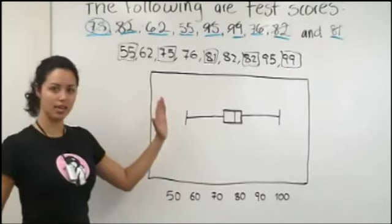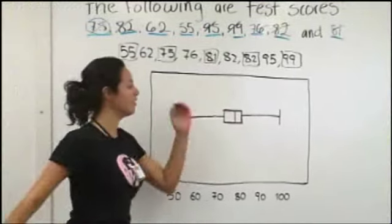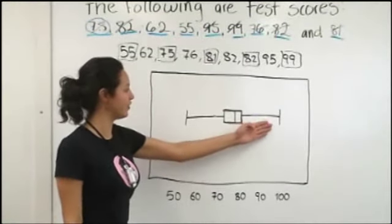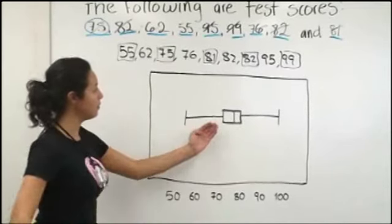Okay, so now here you can see the representation of the maximum, which was 99. And in the middle, this line up here will represent the first quartile, which was 75, and the third quartile, which was 82.